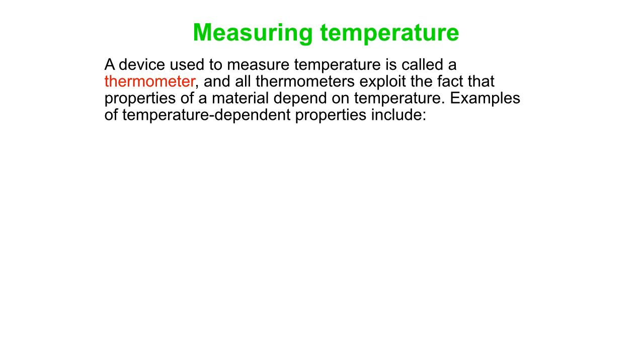How do we measure temperature? As you know, a device we use to measure temperature is known as a thermometer. And every thermometer that exists exploits the fact that some property of a material depends on temperature. And there's lots of things that are temperature dependent. So you can make a thermometer based on the pressure in a sealed container of gas, for instance, the volume occupied by a liquid, that's often what is used.